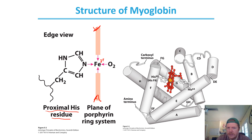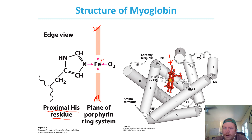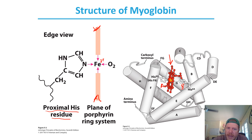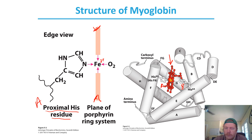In this view, the heme ring is visible with the orange sphere in the center representing the iron ion. There are a pair of histidine rings labeled A and B. The one labeled A is the proximal histidine residue, and the one labeled B is the distal histidine residue.